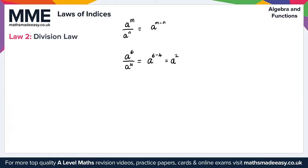We can also use the division law with negative numbers. For example, x cubed over x to the minus 1. Here we have to be slightly careful — this is x to the 3 minus minus 1. Minus minus 1 becomes plus 1, giving us x to the 3 plus 1, which is x to the 4.